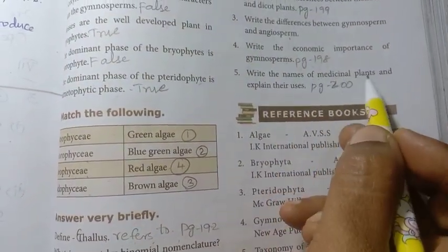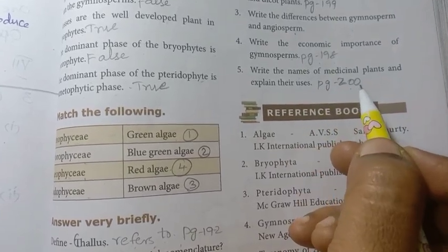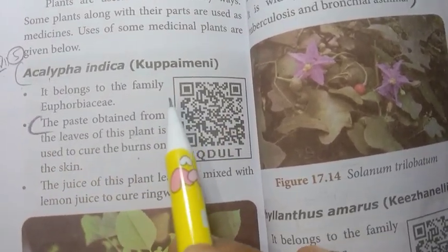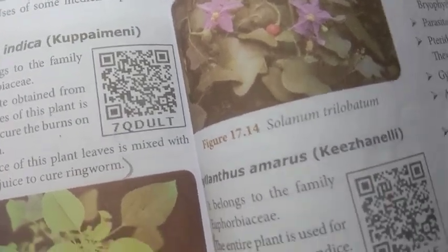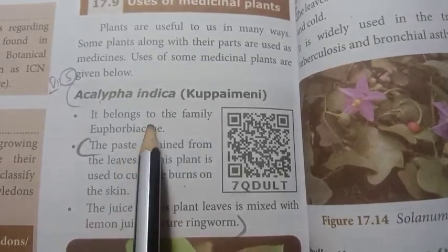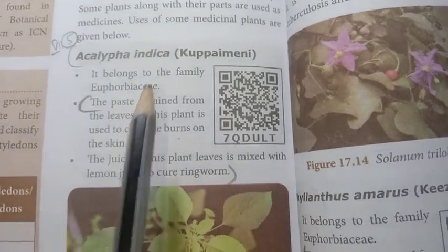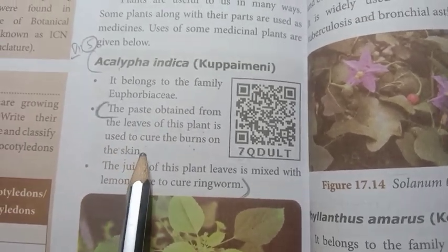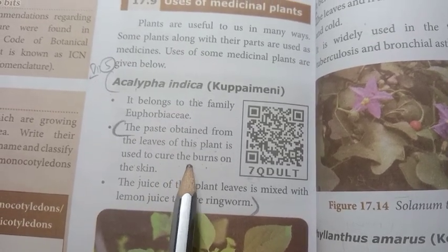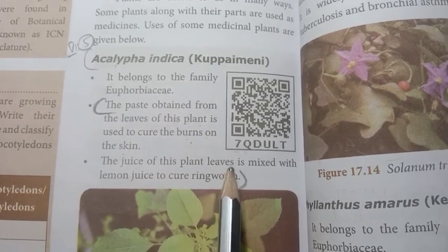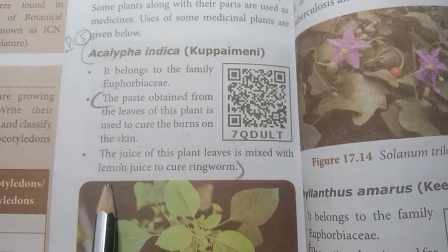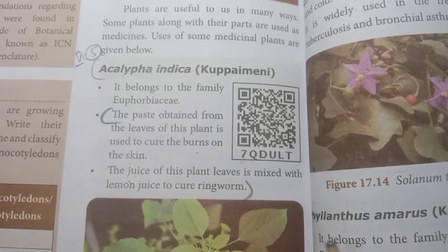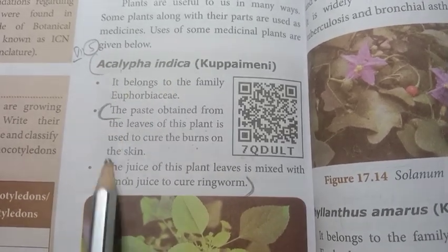Fifth detail question: Write the names of medicinal plants and explain their uses, page 200. Acalypha indica — the paste obtained from the leaves of this plant is used to cure burns on the skin. The juice, mixed with lemon juice, is used to cure ringworm on the skin.